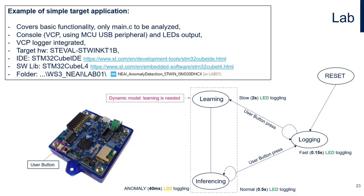We know the normal and regular conditions. I provide you the source code and an example project. However, we are not going to use it today — all features are covered by main. To avoid switching between source code files, console output and virtual COM port logger are integrated. The target hardware is STWIN. Just after reset, the application enters the logger automatically, so there is no need to press any button — just plug the power.